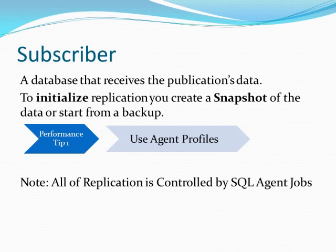What happens when you do a snapshot is it's BCPing all the data out, and at the very end it needs to finalize that data and make a marking point for where it left off. You're going to have blocking at that last finalization point, making sure the schema is exactly right and making sure it's got the right point-in-time data. If your system is super busy, it's going to be a lot of blocking. If you're doing a lot of tables in your publications, you'll want to be aware — maybe do this after hours in a super busy system.